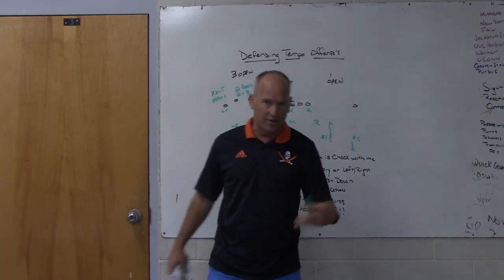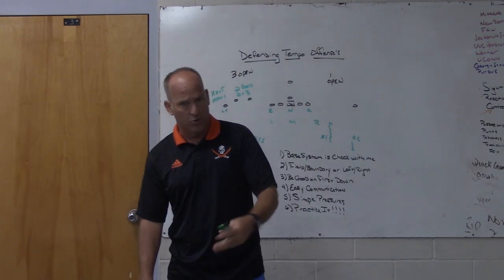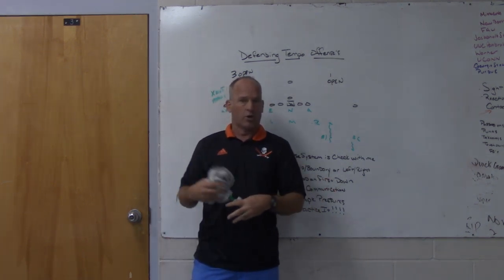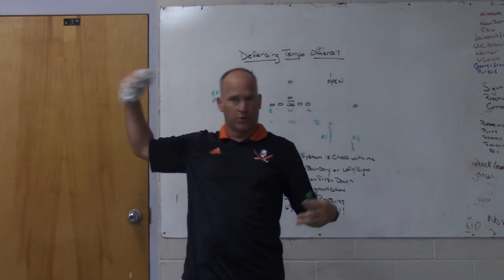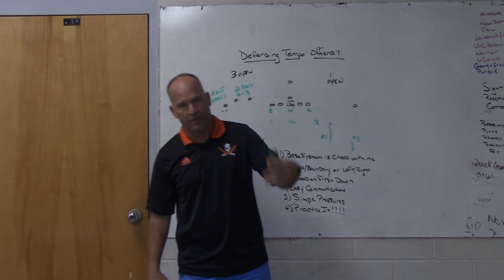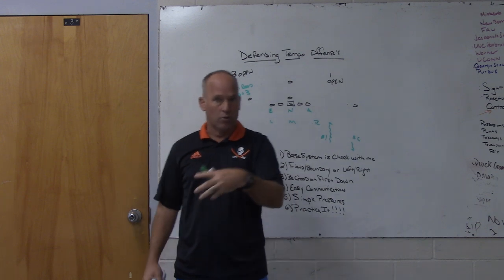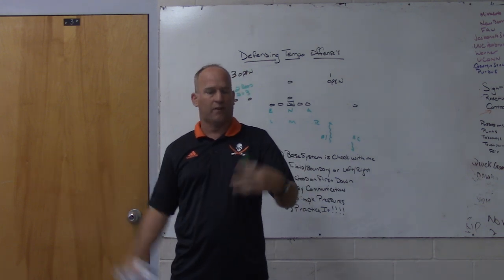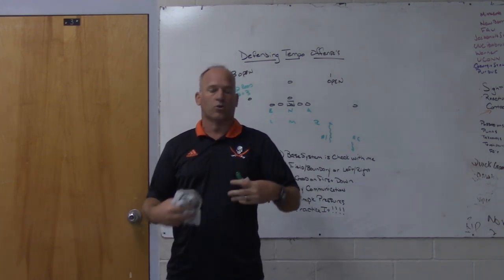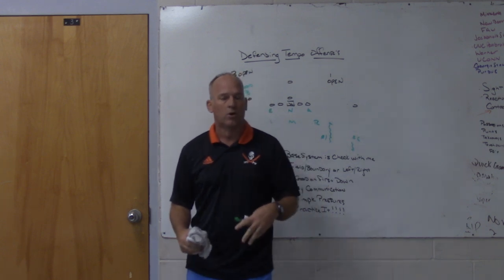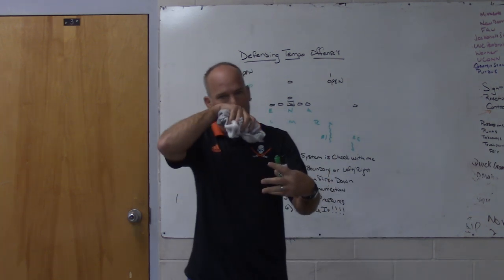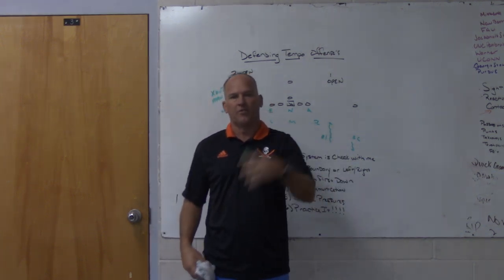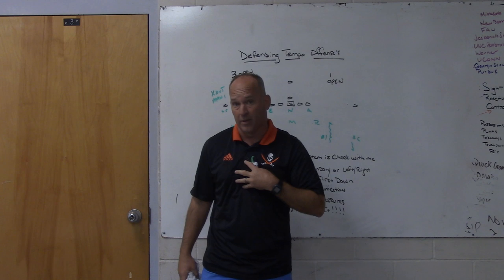If you play a field-and-boundary type defense, you can set your front field and boundary, set your coverage field and boundary, and then have your coverage checks if they go formation into the boundary or formation into the field. You can have set coverage checks so you feel like you're not moving guys all around. As long as that's part of your base system — something you don't have to scramble to communicate to your players — I think it's a lot easier when defending tempo teams to be field-boundary or left-to-right.